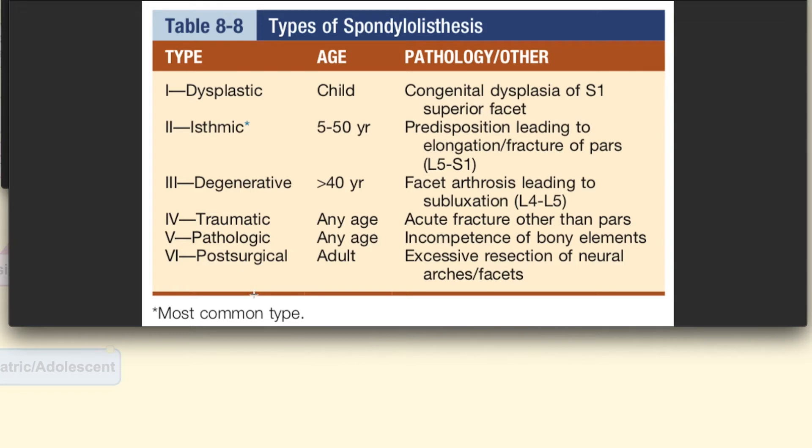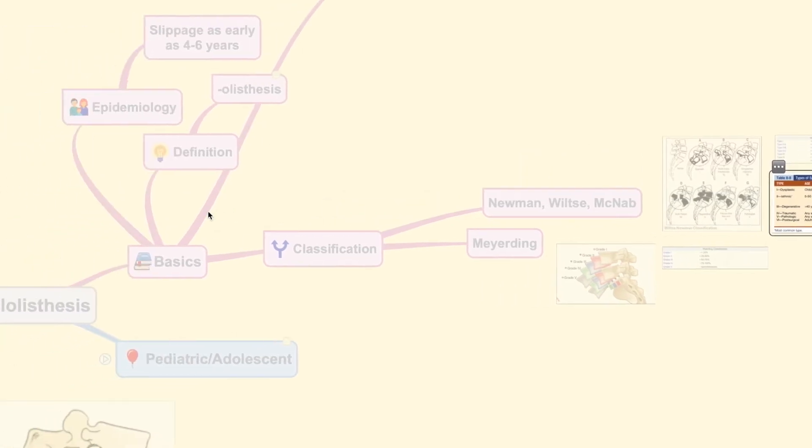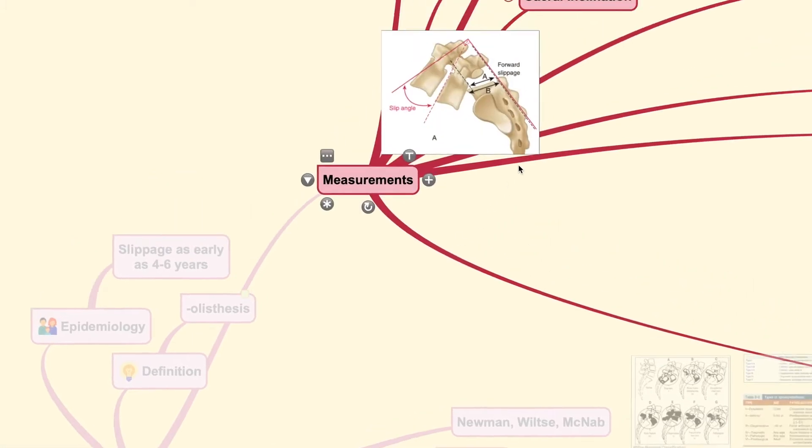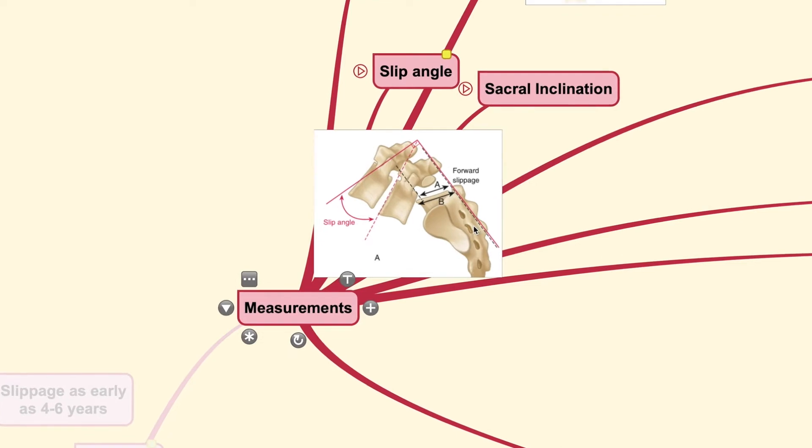And next, moving on, since the spine is slipping forward, there should be some measurements that help us determine how much the spine has slipped, how much the spine has changed in terms of balance, and what are the degrees of the slip angle.